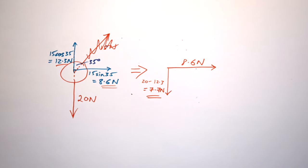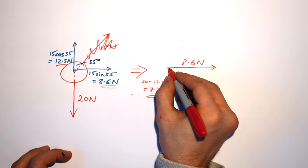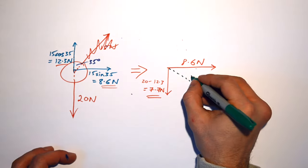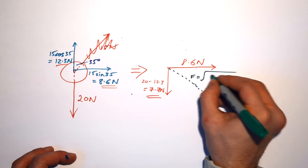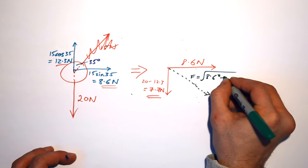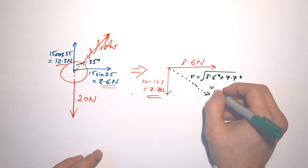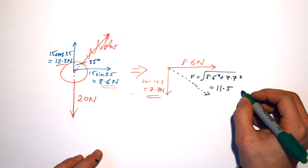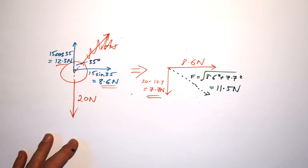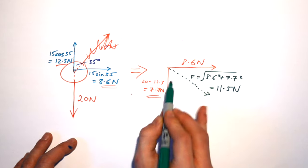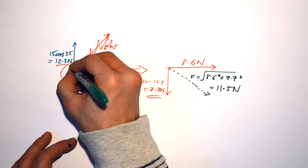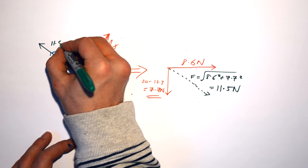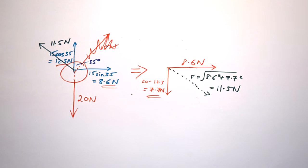Now I have two vectors at right angles to each other — 8.6 N horizontally and 7.7 N vertically. All I have to do is find the resultant. Calling it F, that's the square root of 8.6 squared plus 7.7 squared, which gives me 11.5 Newtons. To keep this system in equilibrium, I would apply a third force of 11.5 Newtons in exactly the opposite direction.